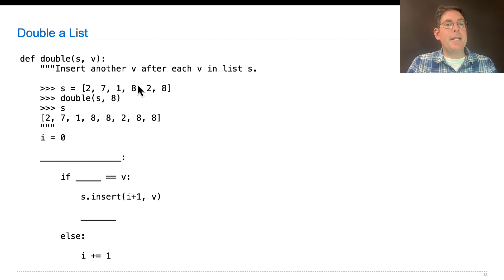So s is 271828. We're going to double all the eights, which means that we change s. Double returns none, so that it's 27188288.